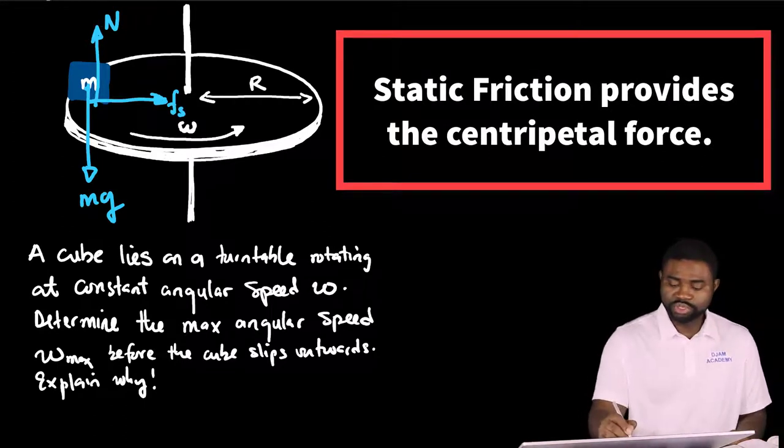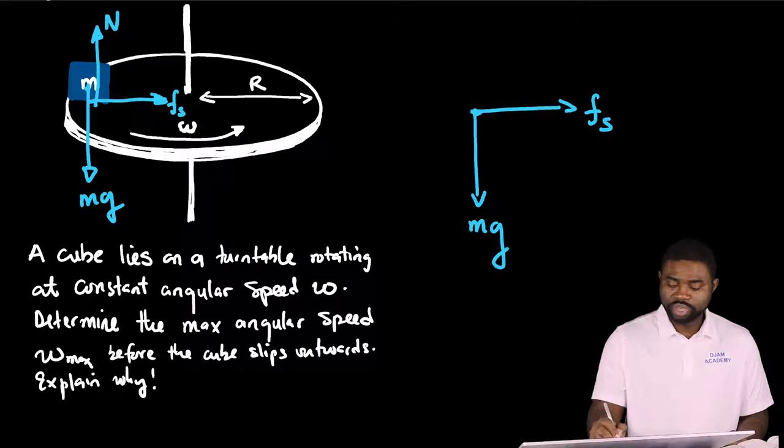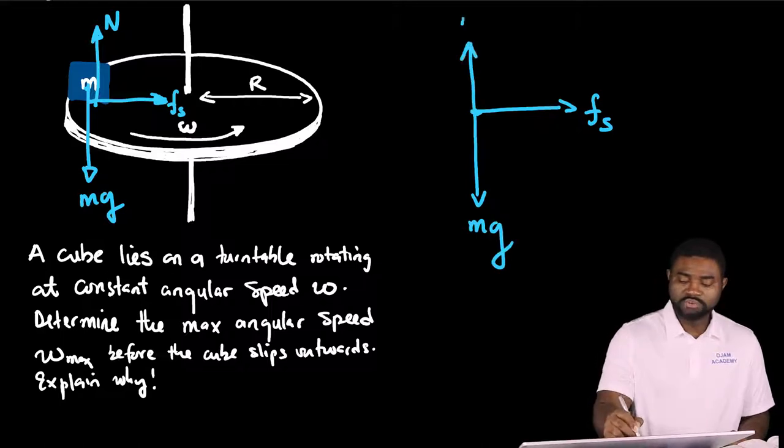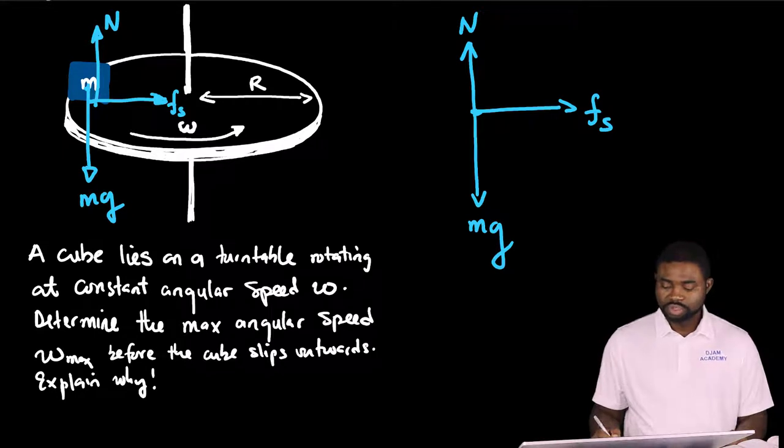So if we draw our free body diagram, this is static friction. This is the weight and you have here the normal force. So by definition,